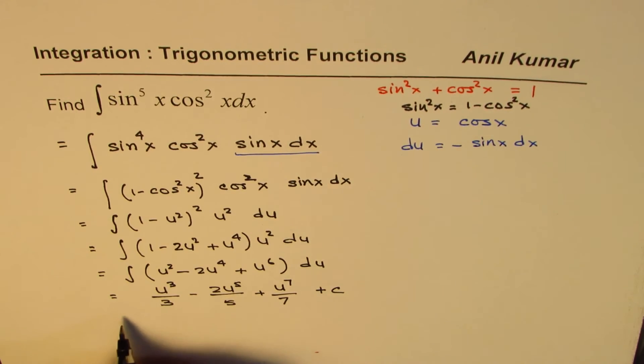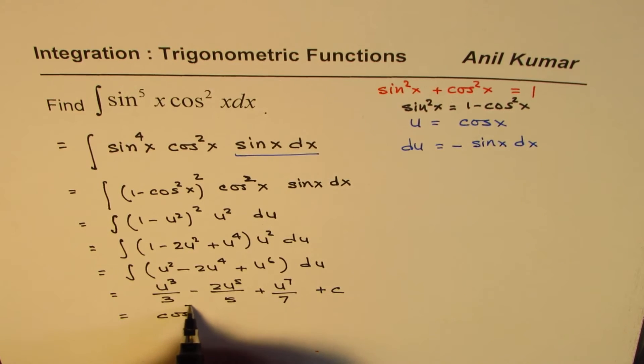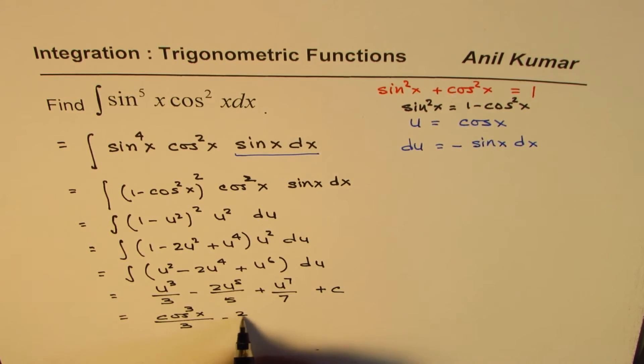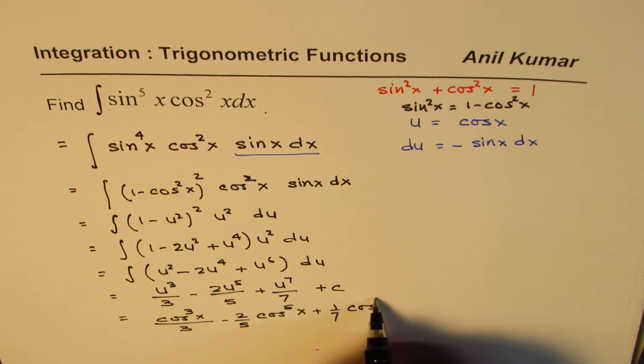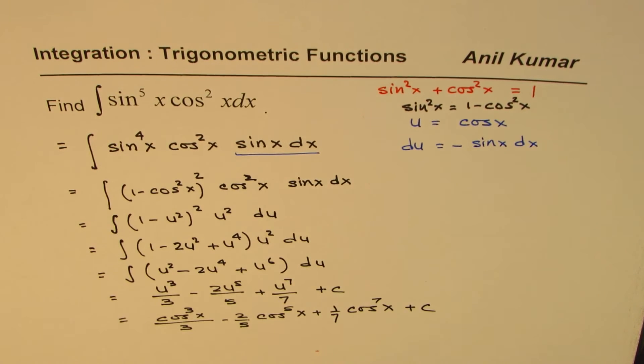And now replace u by cos x, the original function. So we have cos cube x over 3 minus 2 over 5 cos 5x plus 1 over 7 cos 7x plus c. So that is how you can always solve these questions.